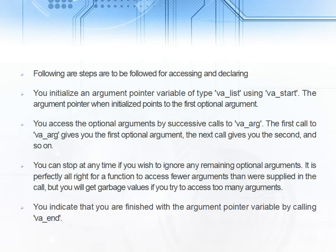Let us follow the steps for accessing and declaring a variadic function. First you have to initialize an argument pointer variable of type va underscore list. Then you have to use va underscore start which will help you to initialize points to the first optional argument.